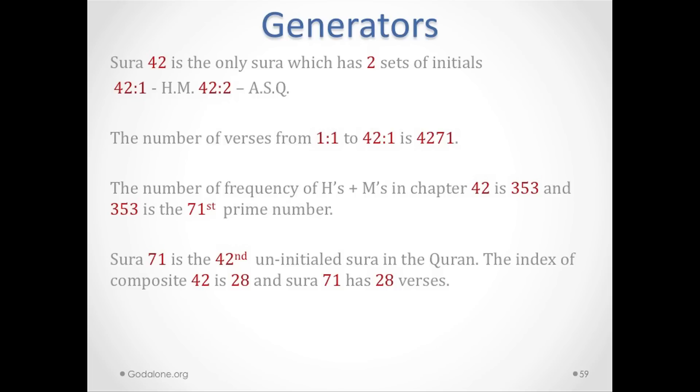Chapter 42 is the only chapter in the Quran that has two sets of initials: 42:1 (H.M.) and 42:2 (Ain Sin Qaf). The number of verses from 1:1 to 42:1 is exactly 4271 verses, and 4271 is the 114th prime, which is the number of chapters in the Quran. The frequency of HM in chapter 42 is 353, which is the 71st prime number. Chapter 71 is the 42nd uninitial chapter, and its index is 28, and chapter 71 has 28 verses.